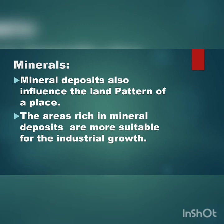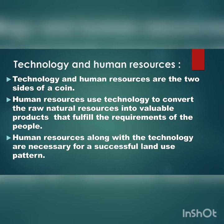Next, we'll study about minerals. Mineral deposits also influence the land use pattern of a place. For example, regions having mineral deposits are used for mining purposes, such as the Kolar gold mine. Huge industries can be set up in the vicinity. The areas rich in mineral deposits are more suitable for industrial growth. Next is the last factor: technology and human resources. Human resources use technology to convert raw natural resources into valuable products. Human resources along with technology are necessary for a successful land use pattern.